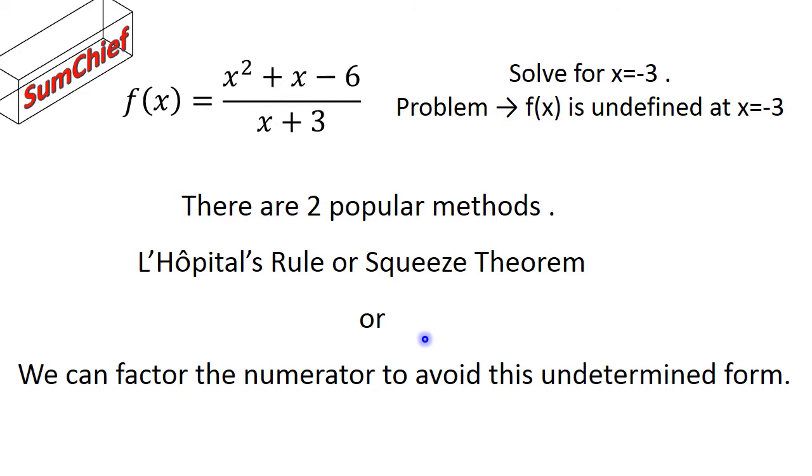Or, in this particular example, we could factor the numerator and avoid the indeterminate form. Hopefully we can find an x plus 3 in the numerator, then we can cancel out the x plus 3 in the denominator as well. Cross-cancelling.